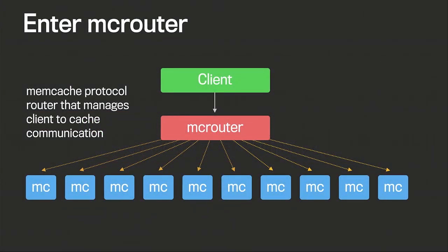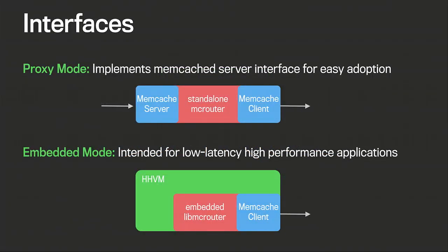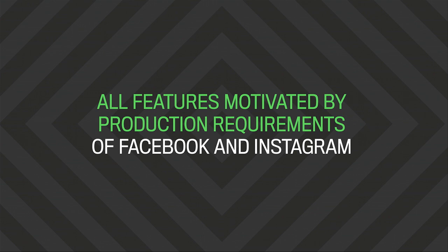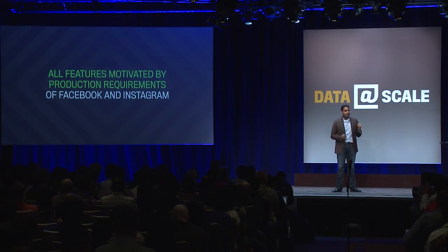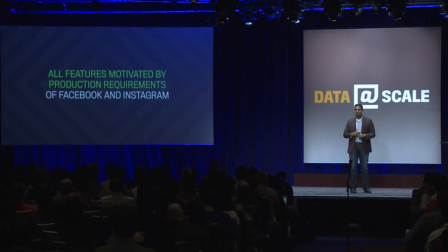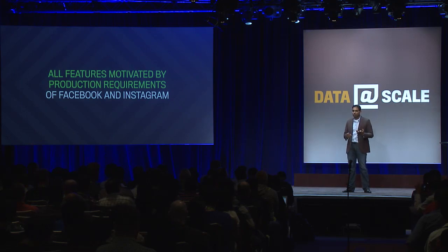So enter McRouter. McRouter is a piece of middleware — a memcache protocol router that manages client-to-cache communication, sitting between the client and the cache. We present two modes of operation: a proxy mode that presents a simple server interface as a drop-in replacement for a memcache server, and an embedded mode for low latency and high performance, which we use inside Facebook. All of McRouter's features are motivated by the production requirements of Facebook and Instagram — none were added for fun, they were added out of need, so they are robust and production quality.